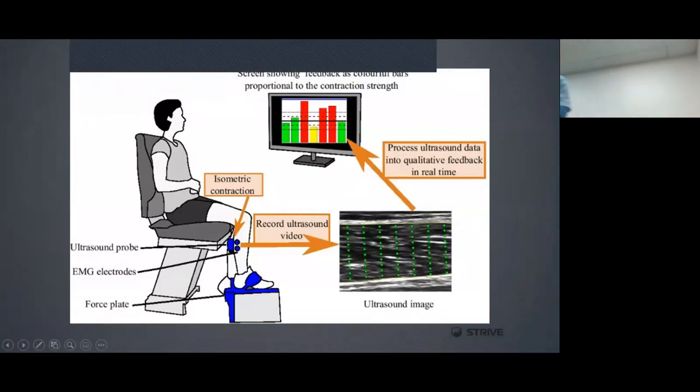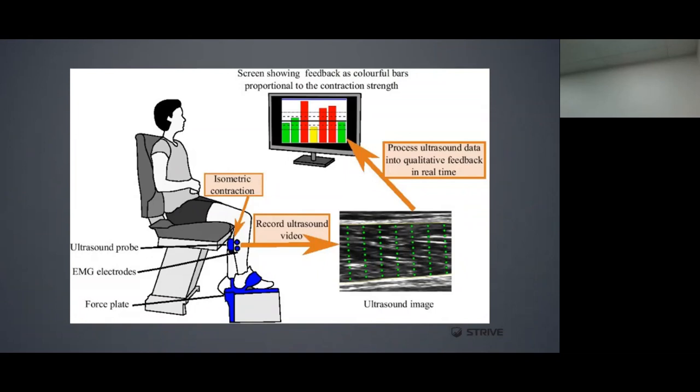Here we see an image of a traditional EMG sensor being applied to a specific muscle. There's an ultrasound probe, EMG electrodes applied to the specific muscle, and the individual is applying force to a force plate while performing isometric contractions. The electrodes record the data and convert it into qualitative feedback in real time, so both the patient and the clinician are able to see the muscular output being produced during that contraction, whether it's isometric or isokinetic.